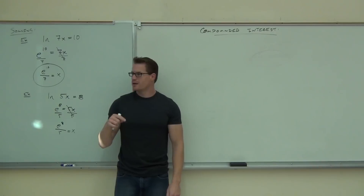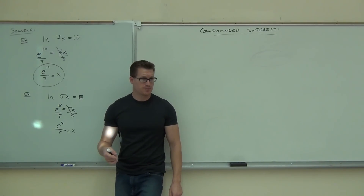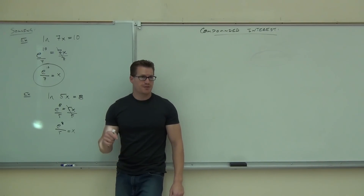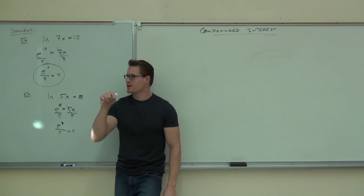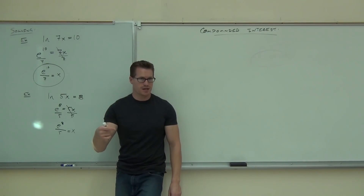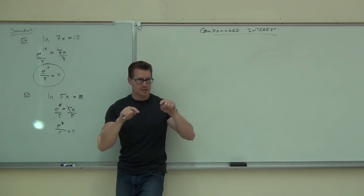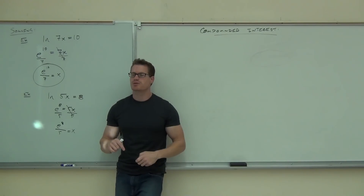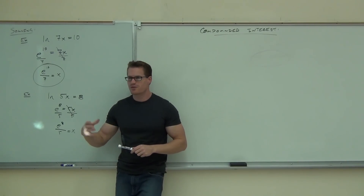To evaluate E to the 8th, look above your LN button — there's an E to the x button. Press second then LN, or the number then E to the x, depending on your calculator. That gives you E to the 8th power. Then divide by 5, and it gives you the approximation of x.